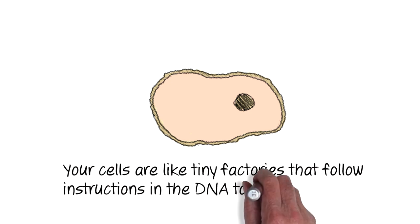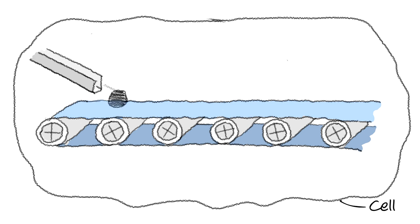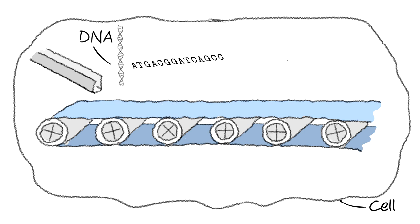Cells are like tiny factories that follow instructions in the DNA to create proteins, the building blocks of every part of our body. To create a protein, first the instructions have to be identified in the DNA at the nucleus, almost like a highlighter pen on typewritten text.